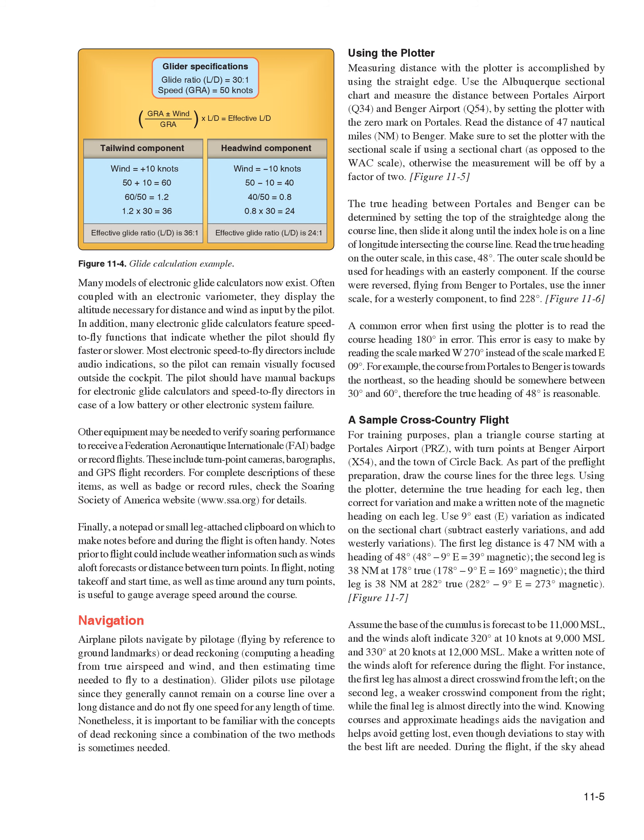The outer scale should be used for headings with an easterly component. If the course were reversed, flying from Benger to Portales, use the inner scale for a westerly component—228 degrees. A common error when first using the plotter is reading the course heading 180 degrees in error, for example reading the scale marked W-270 degrees instead of E-090 degrees. Always verify the heading makes sense directionally; the course from Portales to Benger is toward the northeast, so a heading near 48 degrees is reasonable.